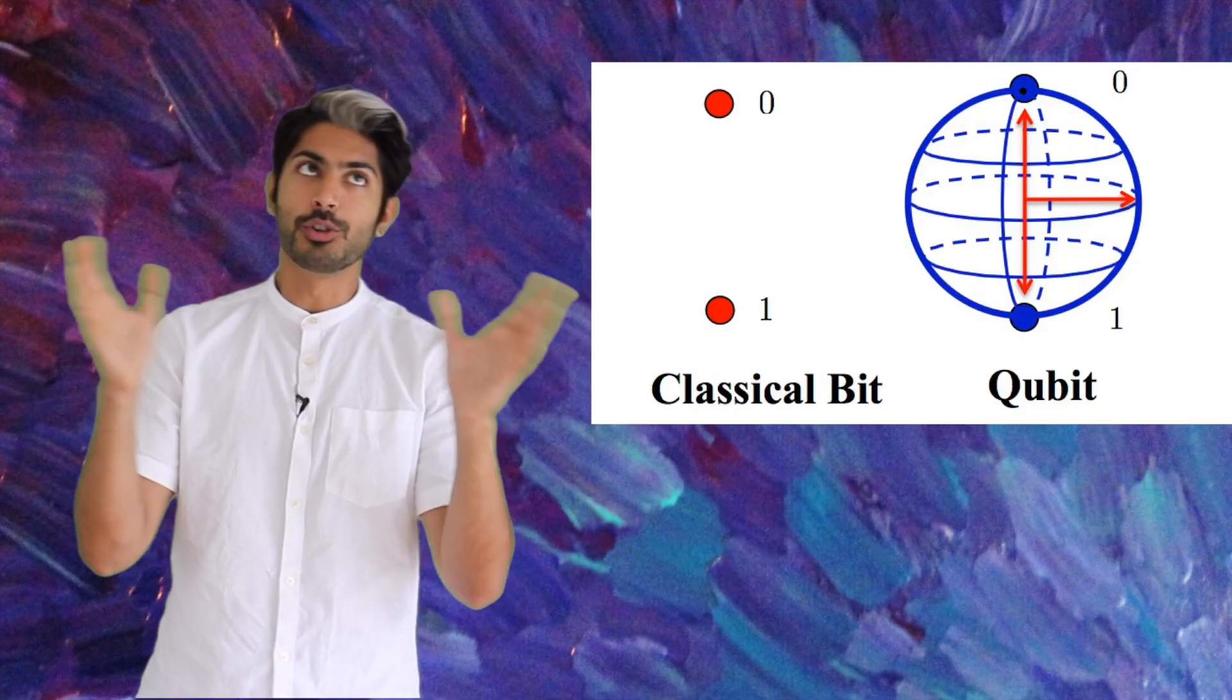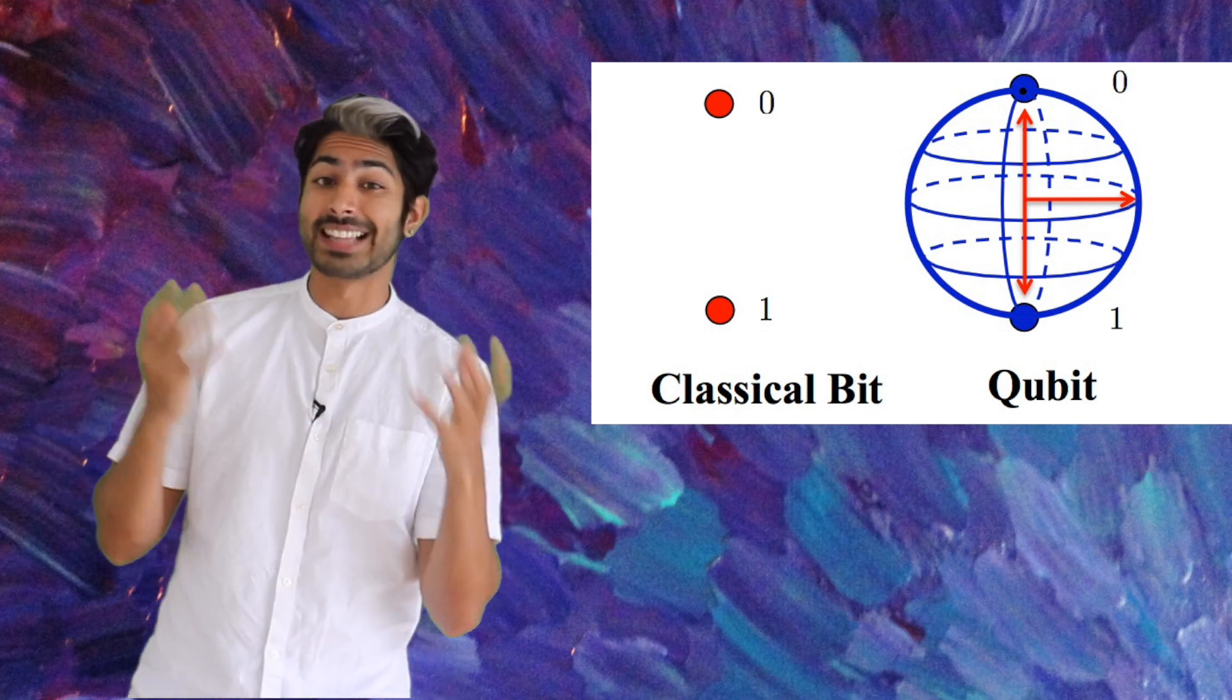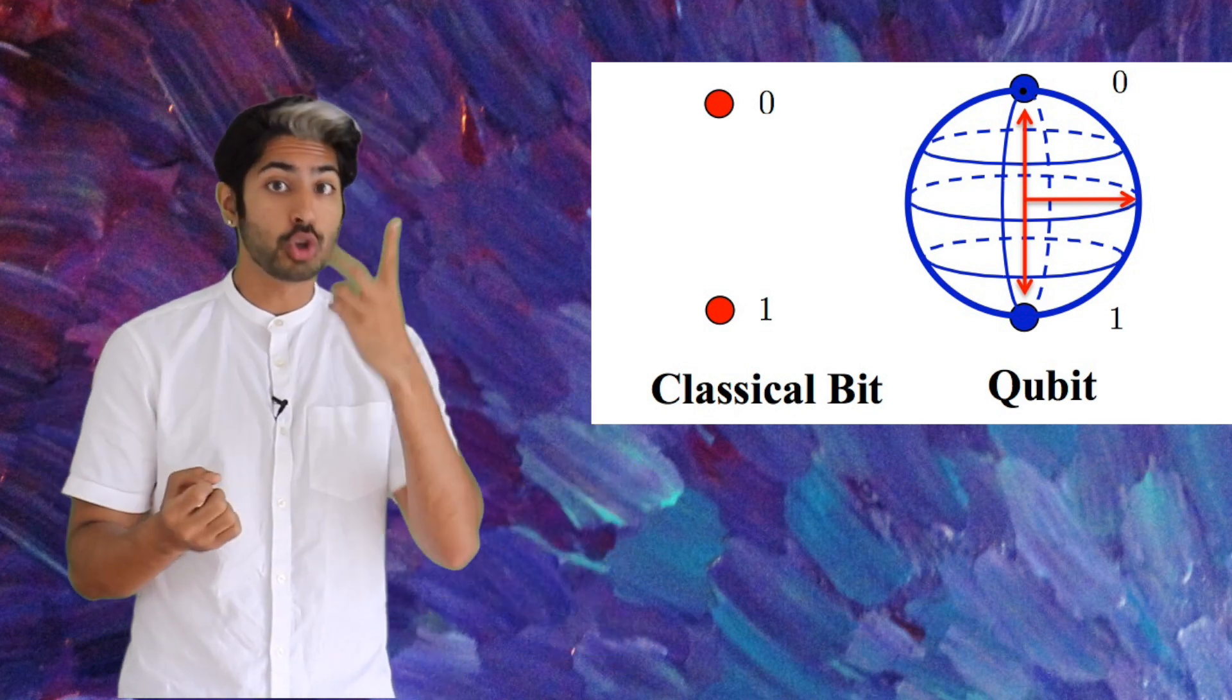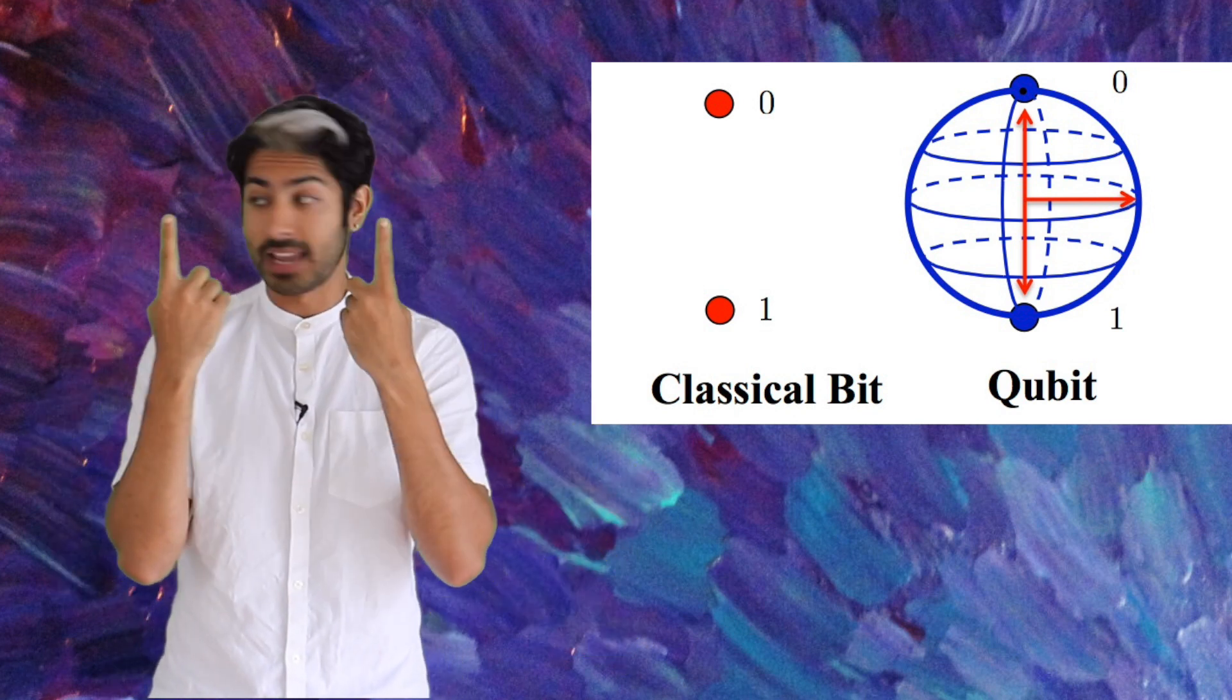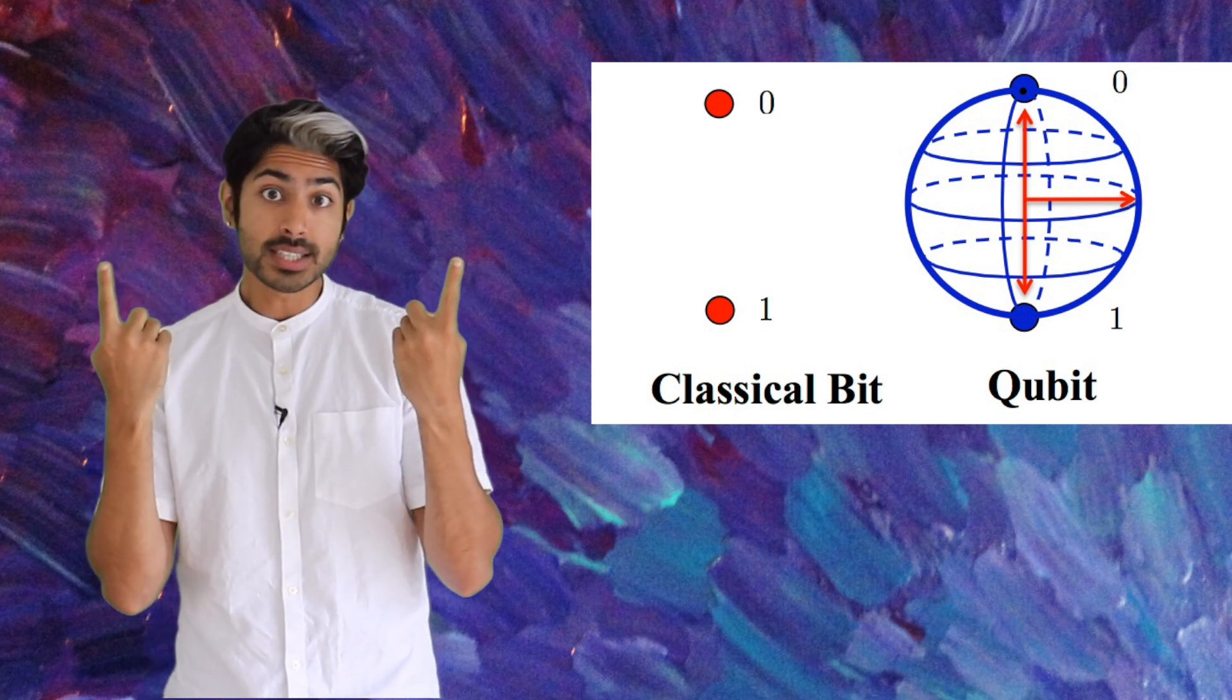Okay, so you might be thinking, big deal—couldn't you just achieve superposition on a classical computer by just using two ordinary bits at the same time? No need for a qubit. No, because there's more to quantum physics than just superposition. There's also the idea of entanglement.